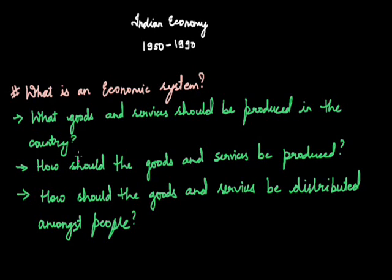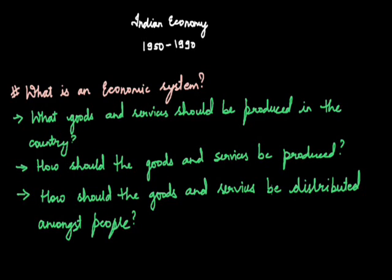So, the economic system is based on what kind of goods and services should be produced in the country. The second query is: how should the goods and services be produced? This is when you decide what kind of input you require for producing those goods and services — whether producers should be using more human labor or more capital-intensive inputs like machinery, computers, and technology. The type of inputs would decide what kind of economy it is: if we use more human labor, ours is a labor-intensive economy; if we lean more towards capital goods, ours would be a capitalist economy.